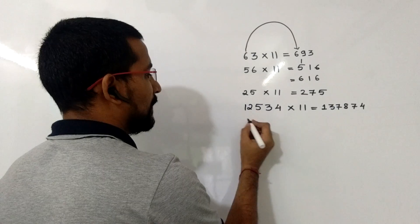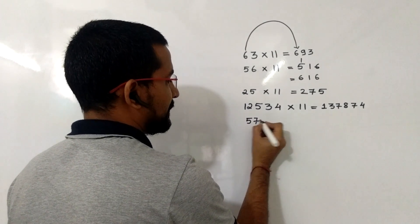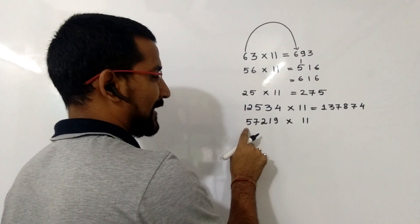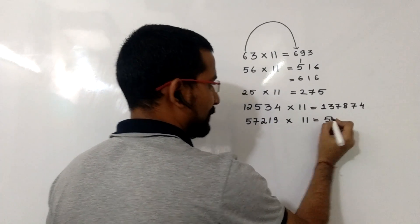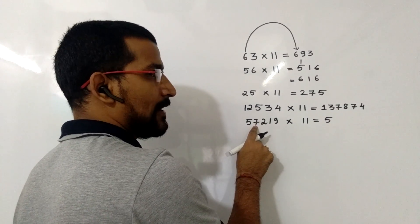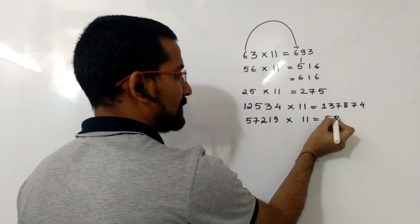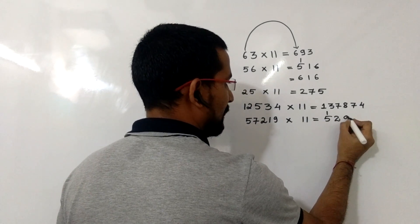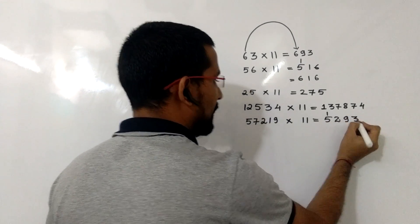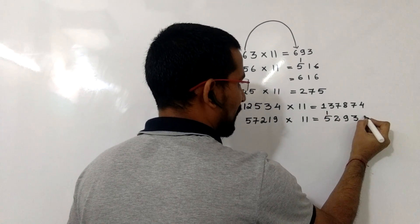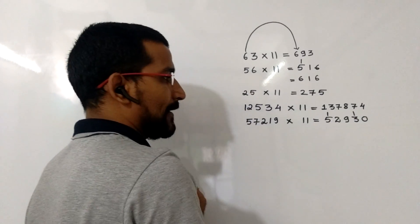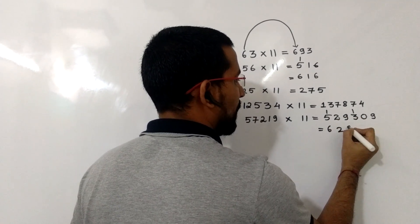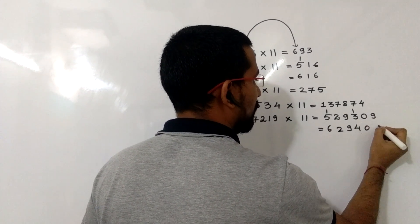Now we will take another example: 57219 into 11. Now first, again, the first number as it is, that is 5. Now 5 plus 7, that is 12. So we will write the unit place as it is, that is 2, and we will carry forward one here. Now 7 plus 2, that is 9. Then 2 plus 1, that is 3. 1 plus 9, that is 10. Now again we will write 0 here and we will carry forward one. And now the last digit as it is. So the answer will be 629409.